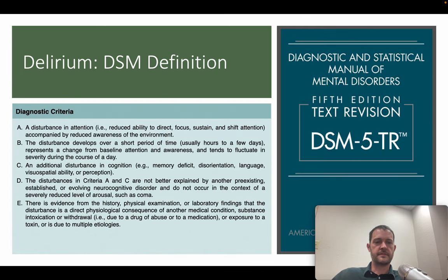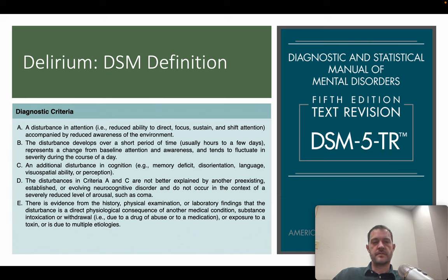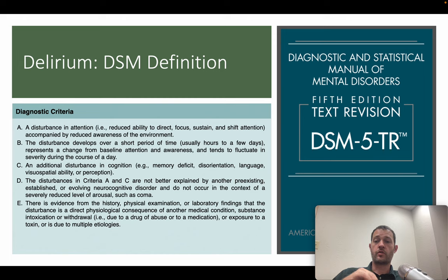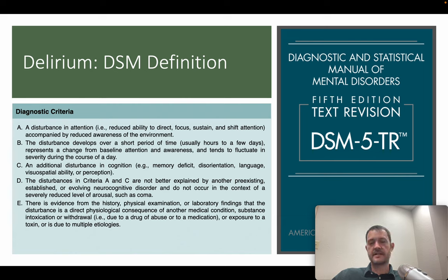Delirium diagnosis criteria A through D are the big ones. The DSM says criterion A is a disturbance in attention — specifically a reduced ability to direct, focus, sustain, or shift attention — often accompanied by a reduction in general awareness of the environment. The disturbance develops over a short period of time, hours to days, represents a change from baseline, and tends to fluctuate in severity throughout the day.